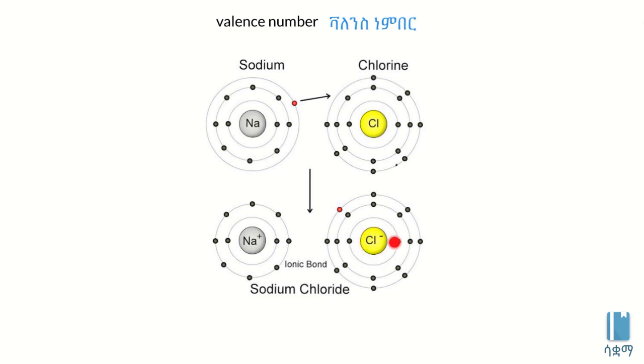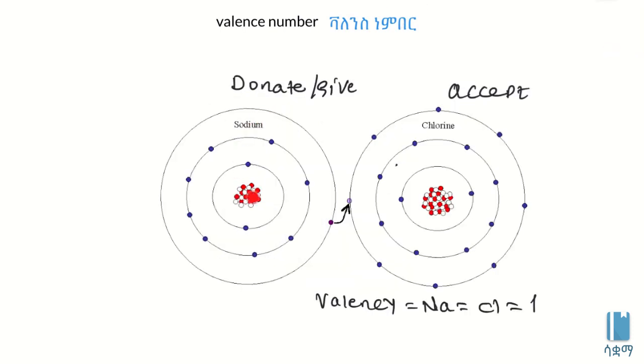Sodium and chlorine form a bond together. Elements bond together to become stable. When sodium has one valence electron and chlorine has seven, sodium donates one electron and chlorine accepts it. So the valence of sodium is one, and the valence of chlorine is one. Sodium chloride compound is formed through this valence.